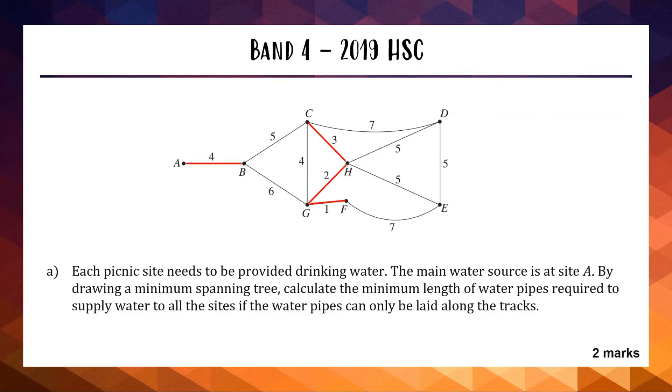Our next shortest options are the 5s. We're going to include this 5 to link B and C. We've got 3 5s over here. We don't want to include all of them because we'll make a loop. Out of these 3 5s, you only need to have 2 of them. I'm going to go from H to D and from H to E. We are connected to every single vertex, no loops. This is our minimum spanning tree. We want to find the length of the water pipe, so we add up all the weights. 1 plus 2 plus 3 plus 4 plus the 3 5s gets us a total length of 25 kilometers.